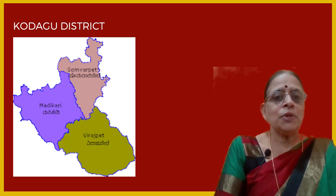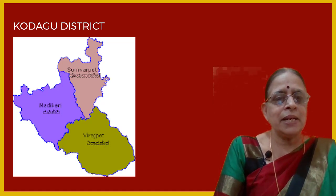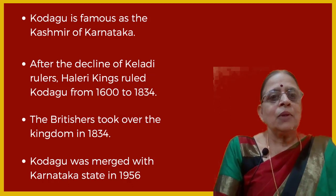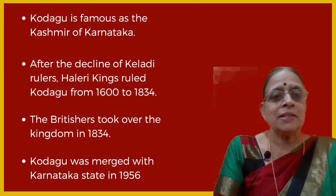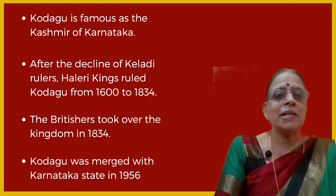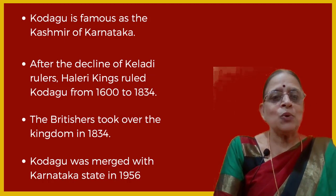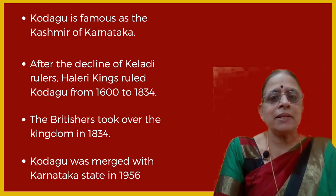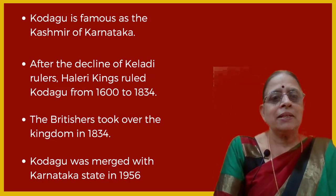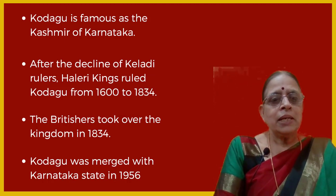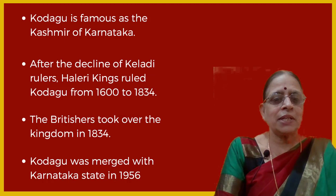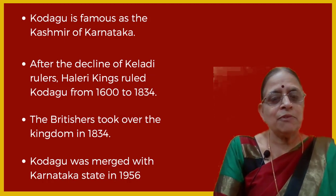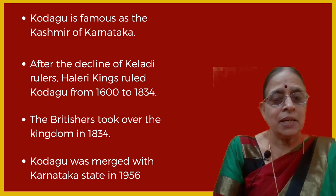Now let us move on to Kodagu district. Kodagu district comprises three taluks: Somvarpete, Madikeri and Virajpete. Kodagu is famous as the Kashmir of Karnataka because of its natural scenery. After the decline of Keladi rulers, Haleri kings ruled Kodagu from 1600 to 1834 — almost two centuries. The British took over the kingdom in 1834, and Kodagu was merged with Karnataka state in the year 1956, after the unification of Karnataka.